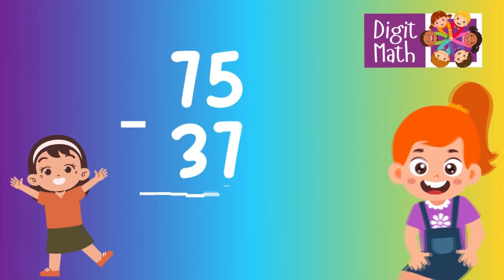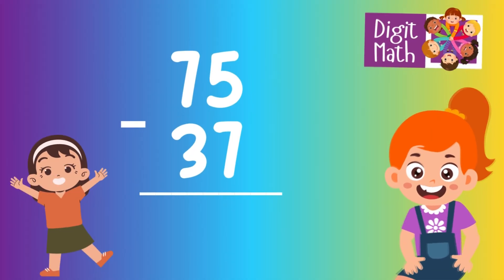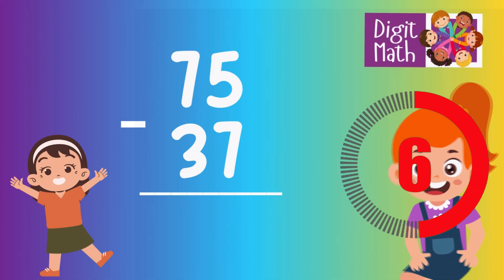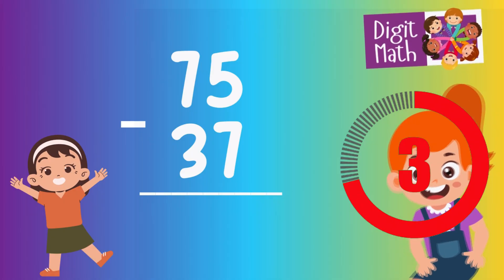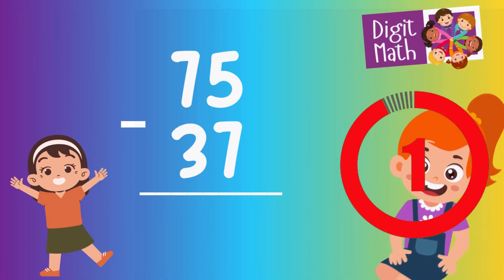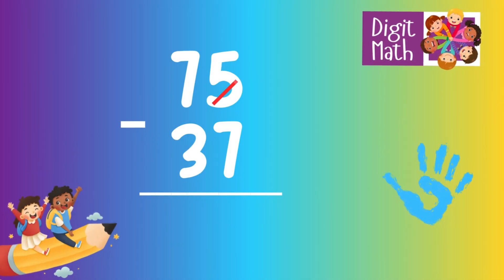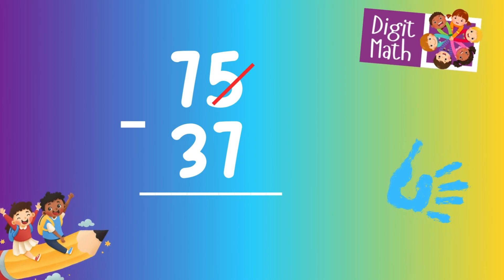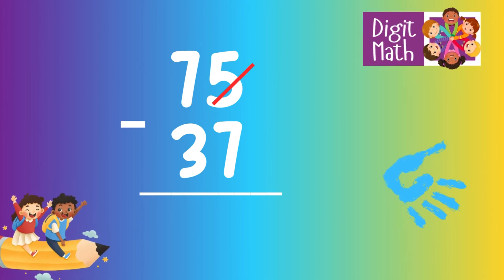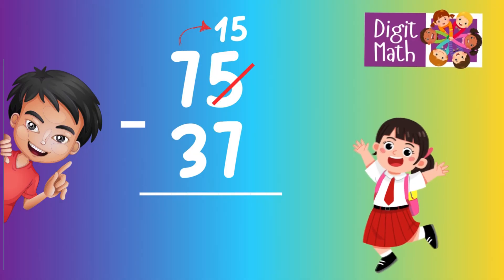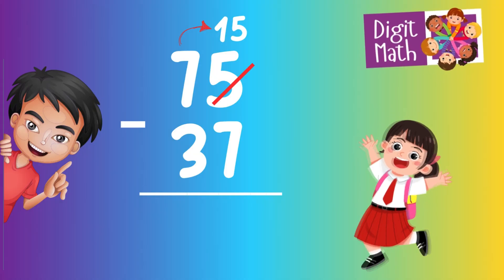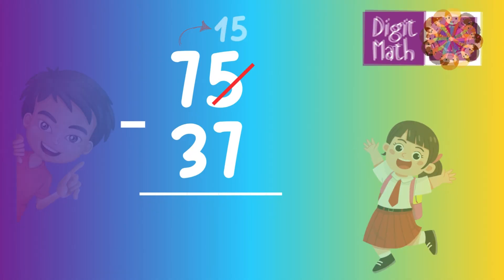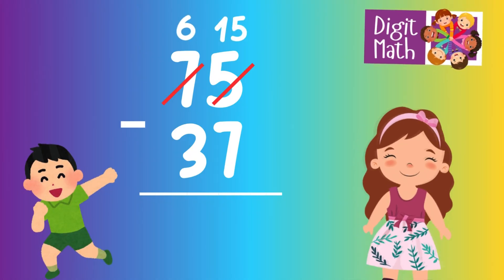75 minus 37 is... Time to think. In the Units column, we have 5 minus 7. Since it's not possible to subtract 7 from 5, we need to borrow from the Tens column. In the Tens column, we have 7. We take 1 from the Tens, leaving 6 in the Tens column and turning the Units column into 15.